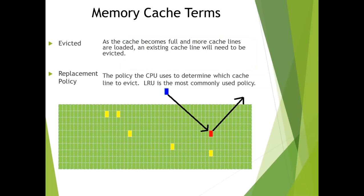Another term you'll hear is 'evicted.' The L1 cache on most systems I work on is about 32K — and it fills up quickly. When it fills up, something has to be evicted — kicked out of the cache — and the new cache line is put in. The most common replacement policy is LRU: least recently used data is evicted first.